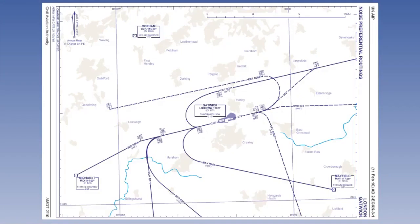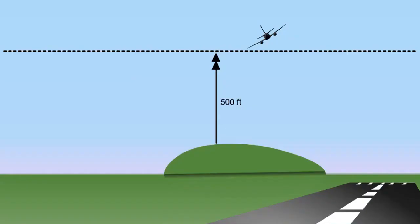Noise preferential routes are established to ensure that departing and arriving aircraft avoid flying over noise-sensitive areas near airfields as much as possible. There are strict parameters which apply to the use of turns in noise preferential routes, principally to avoid manoeuvres which could be hazardous close to the ground.